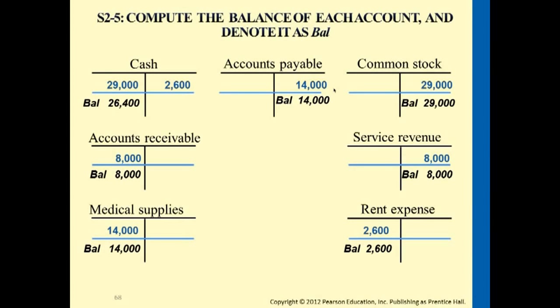This is an example of getting to a trial balance using only four transactions. We summarize the ledger and posting by figuring out the balance for each T-account. It will look like this, and we'll only be using the highlighted numbers for the trial balance.